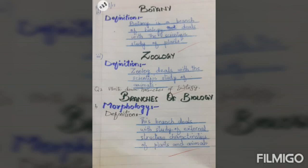Now our next question, which is question number two: write down branches of biology. Our main heading is Branches of Biology. Number one — our side heading is Morphology. Subheading you will write by your black pointer. Now its definition will be centralized: this branch deals with the study of external structures and characteristics of plants and animals.